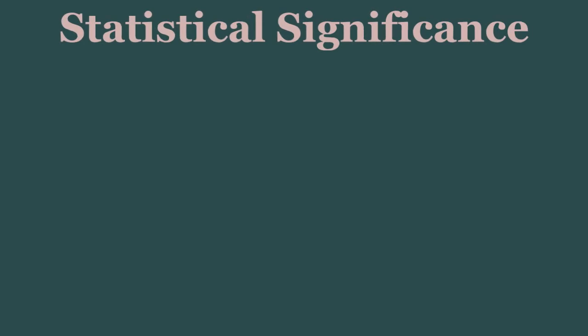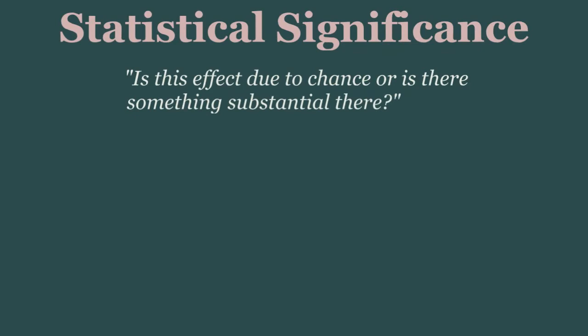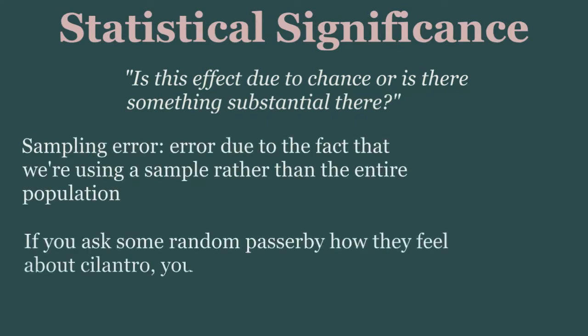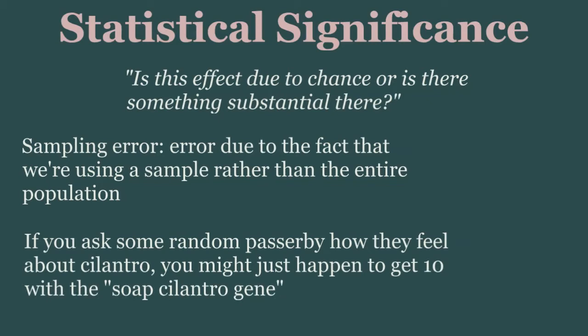Statistical significance is, in essence, the likelihood that what you see in your data is due to chance. In any given study, the sample we take can be quite representative, or quite not representative, of the general population. It may actually be that the difference observed between group A and group B is simply due to the people you happen to recruit, otherwise known as sampling error.